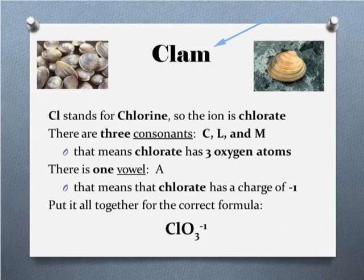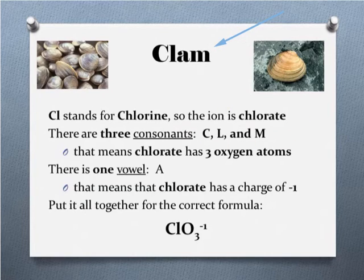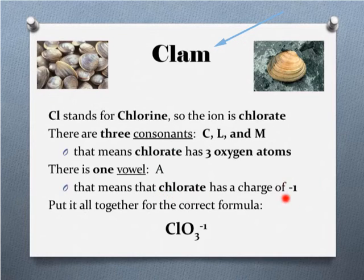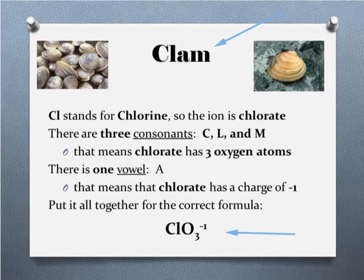The next word is clam. Cl stands for the element chlorine, so our ion is the chlorate. There are three consonants — Cl and M — which means the chlorate ion has three oxygen atoms. There is one vowel, A, which means the chlorate ion has a charge of minus one. The correct formula for the chlorate ion is ClO3⁻¹.